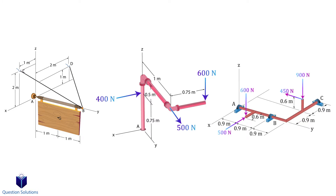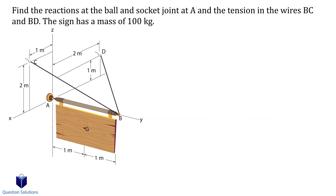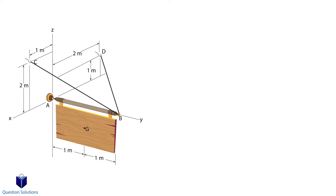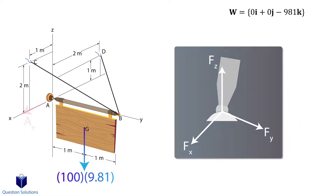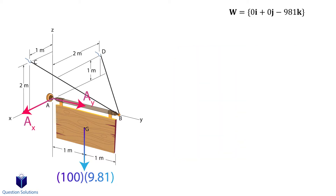In this problem we need to figure out the reactions at the ball and socket joint and the tensions in the wires. The sign has a mass of 100 kilograms, so the vector for weight will be straight down and it will only have a k component. At A we have a ball and socket joint, which means we will have three reactions: one in the x direction, one in the y direction, and another in the z direction. We assume these reactions face the positive x, y, and z axes. Since the ball can rotate inside the socket, no moment reactions will be created about point A.